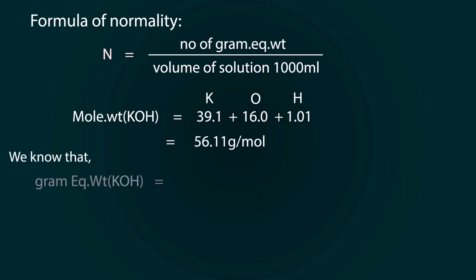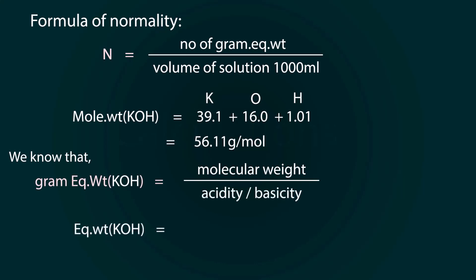We know that gram equivalent weight is equal to molecular weight divided by basicity. So equivalent weight is equal to 56.11 divided by 1 because basicity of potassium hydroxide is 1. So gram equivalent weight is 56.11 grams.